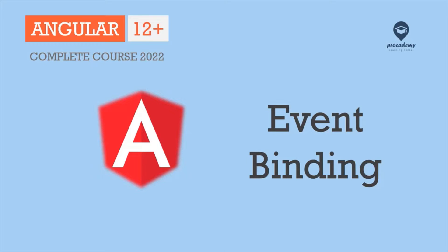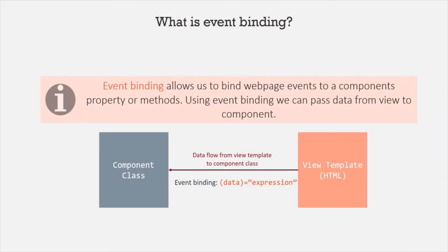In this lecture, you're going to learn about event binding in Angular. Event binding allows us to bind web page events to a component's property or methods. Using event binding, we can pass data from view to component. Using property binding and string interpolation, we can pass data from component class to view template, but using event binding, we can pass data from view template to component class. Event binding is used to bind HTML events to the property or method of a component class.